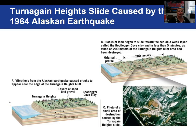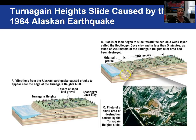The very large 1964 Good Friday earthquake in Alaska caused a landslide in an area called Turnagain Heights. There happened to be a weak clay layer, and when things began to shake, everything slid along this weak clay called the bootlegger cove clay. In less than five minutes, 200 meters of the bluff area had been destroyed.